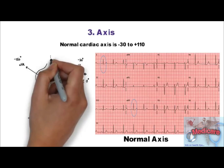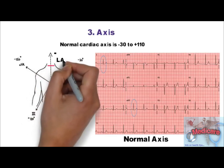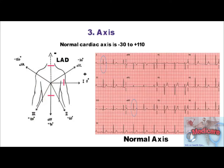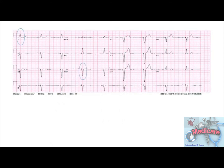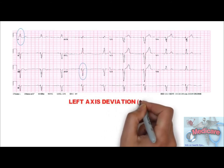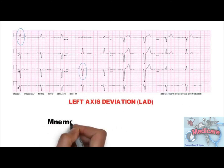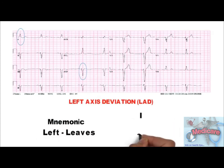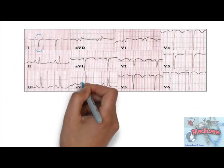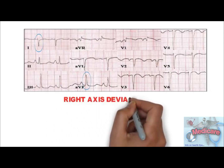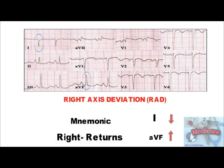If net QRS is positive in lead 1 and negative in AVF, the net vector will be in the left axis deviation range — lead 2 will also be negative in left axis deviation. If net QRS is negative in lead 1 and positive in AVF, the net vector will be in the right axis deviation range. In this ECG, net QRS in lead 1 is positive and negative in AVF — so this is left axis deviation (LAD). Remember the mnemonic 'left leaves,' where deflections in lead 1 and AVF point in opposite directions. For right axis deviation, use the mnemonic 'right returns' — net QRS negative in lead 1 and positive in AVF.